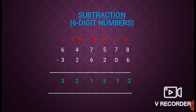Subtraction of a 6-digit number. Here, the places are ones, tens, hundreds, thousands, ten thousands, and lakhs. The minuend is 6,47,578 and subtrahend is 3,26,206. The digits are arranged on the various places from ones to lakhs. Now, start subtraction from ones place.